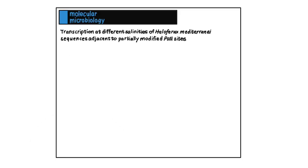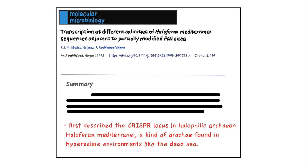But wait a second, behind this cool genome editing technology, who actually discovered CRISPR and when did it happen? To answer this, we go back all the way to 1993 when Francisco Mojica first described the CRISPR locus in Haloferax mediterranei, a kind of archaea found in hypersaline environments like the Dead Sea.